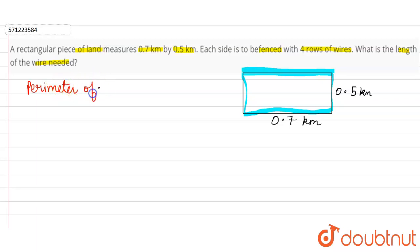Perimeter of rectangle is sum of all the sides of rectangle and the formula for that is twice of length plus breadth, because the opposite sides of rectangle are equal. So this is equal to twice of 0.7 kilometers plus 0.5 kilometers.